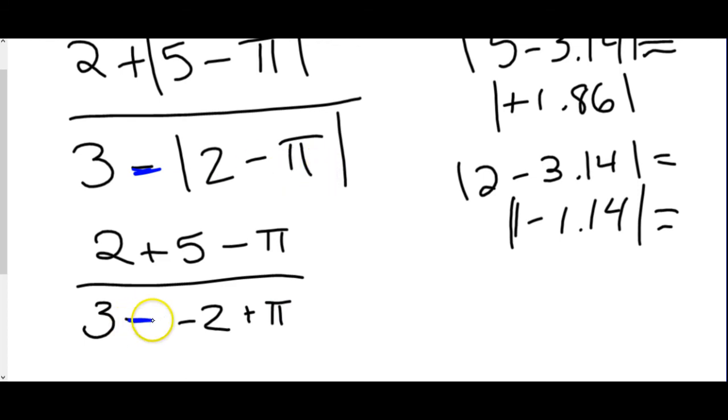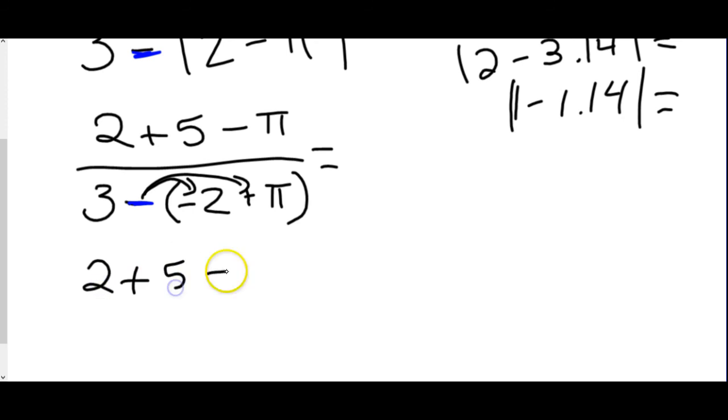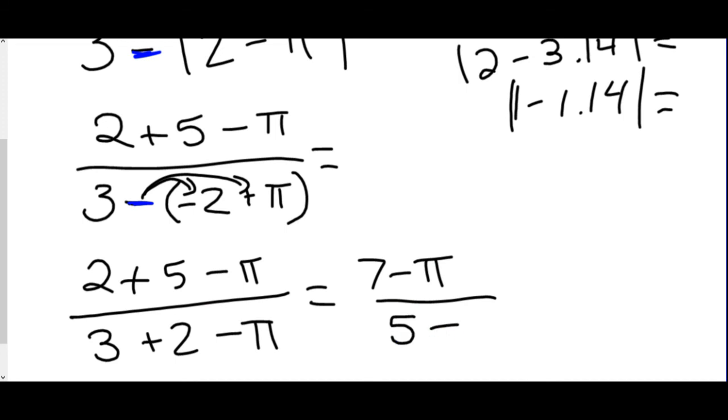Now, because it is an entire expression and we do have this minus sign out front, we do have to now put parentheses because we're going to have to distribute this minus sign. So this will become 2 plus 5 minus pi over 3 plus 2 minus pi. Negative times a negative 2 makes positive 2. Negative times a positive pi makes a negative pi. So now, we just combine any like terms we can. 2 plus 5 is 7. 3 plus 2 is 5. If I could simplify further, I would, but this one will not. So we leave it as 7 minus pi over 5 minus pi.